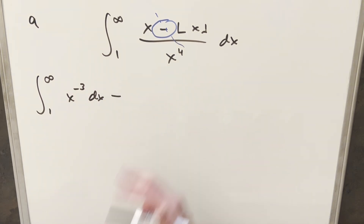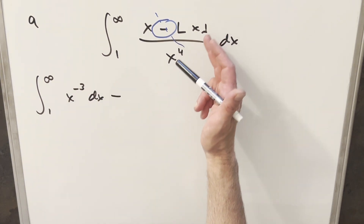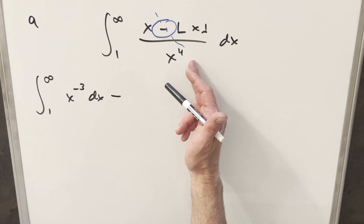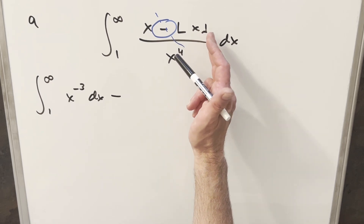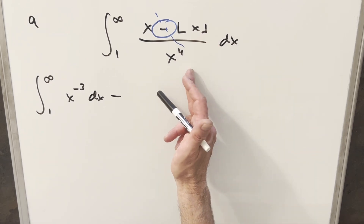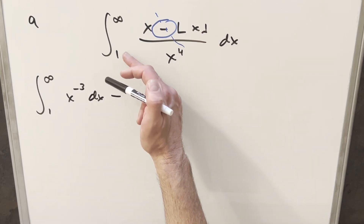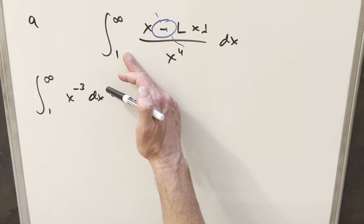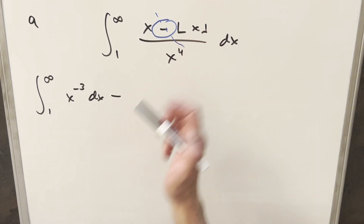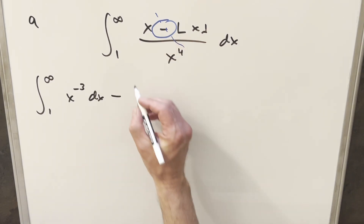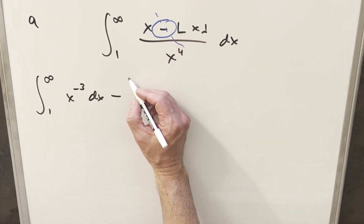Now for the second part, we're going to have the floor function of x over x to the fourth. The floor always returns an integer, but if we break up our bounds, then we're going to be able to simplify this more easily.